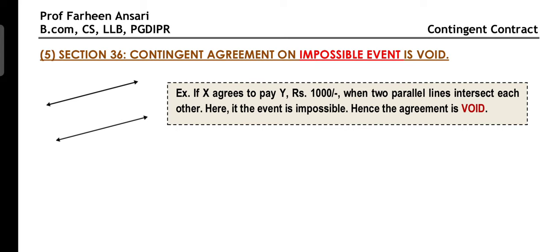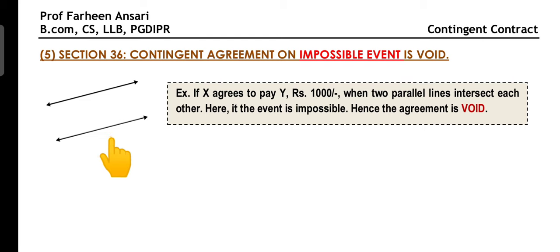Last but not least, Section 36 states that a Contingent Contract which depends on an impossible event is void. For example, X promised Y to pay Rs. 10,000 when two parallel lines intersect. Since two parallel lines can never intersect each other, this event is impossible, and therefore the agreement is void.